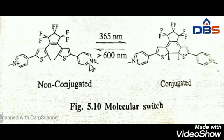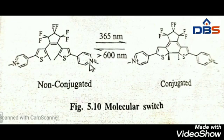The molecule shown in the figure — when the center of the molecule is un-cyclized, a fully conjugated path through the molecule is not available, and so the molecular switch is in the OFF state.